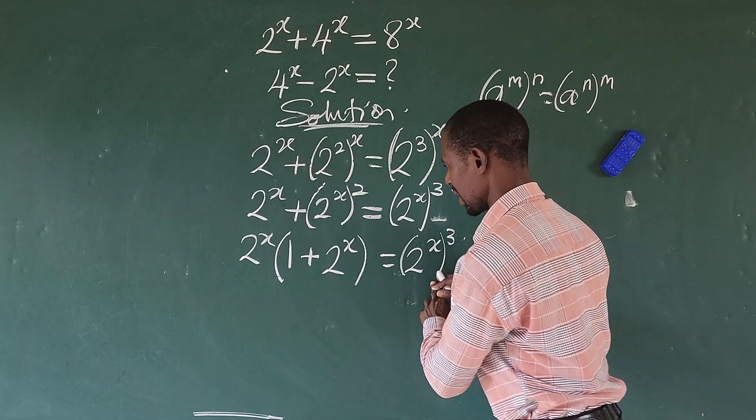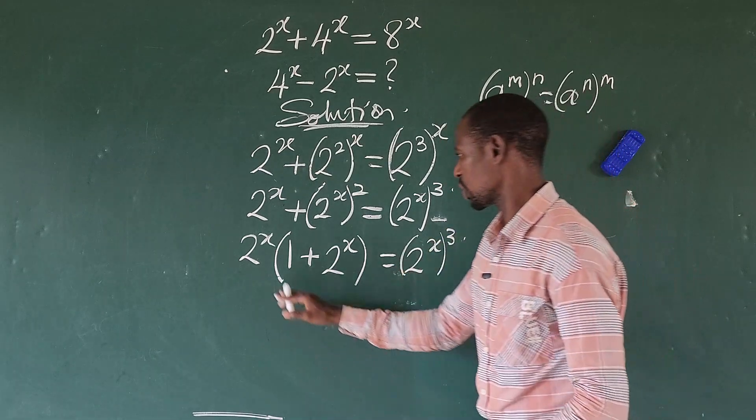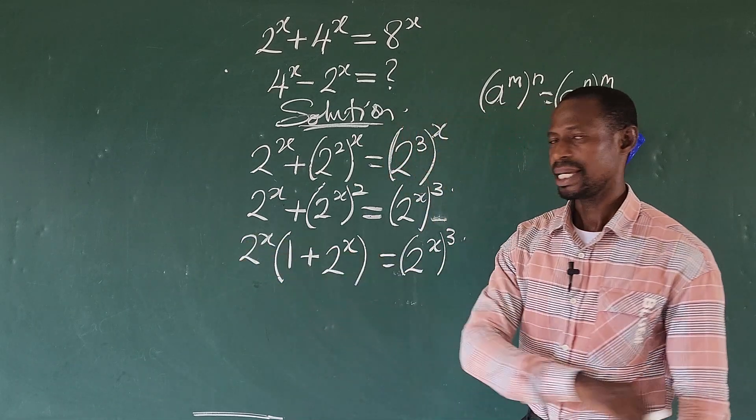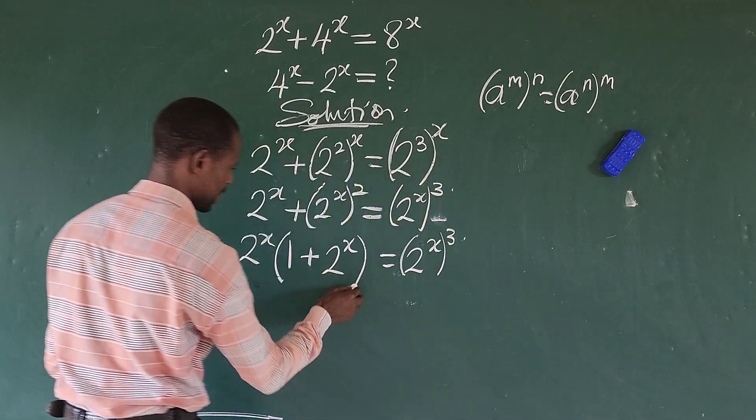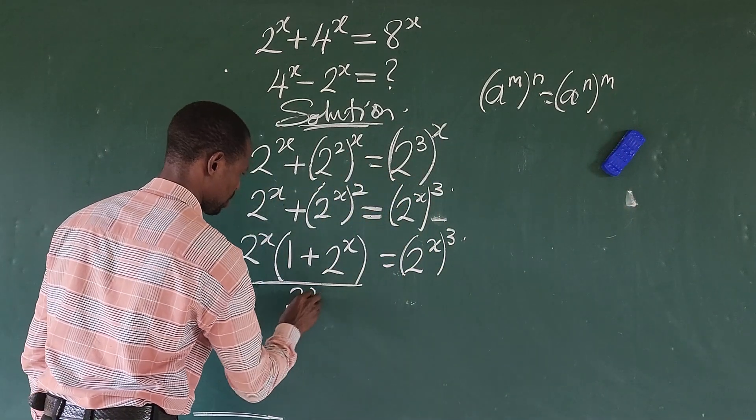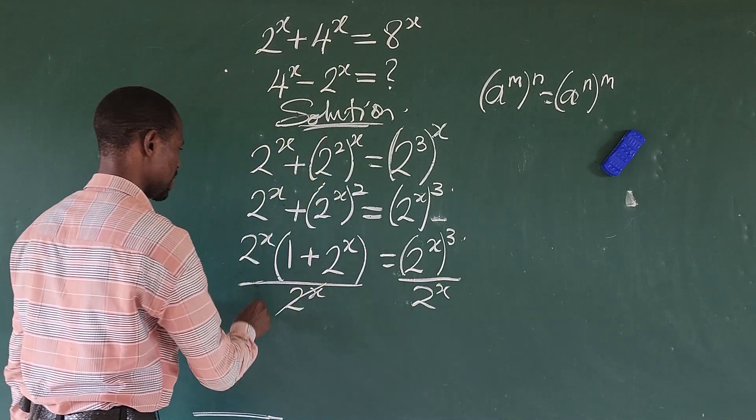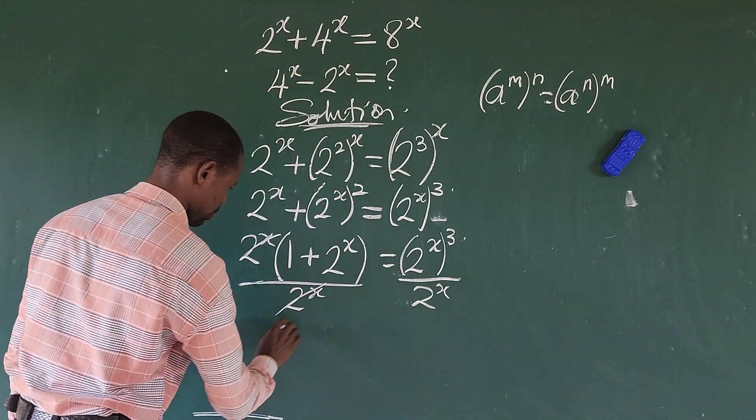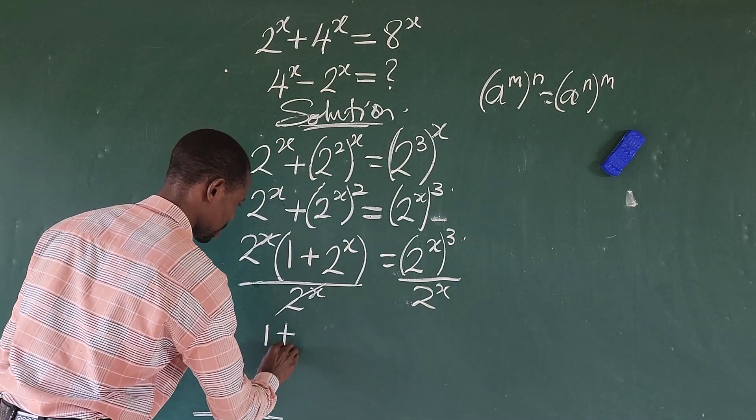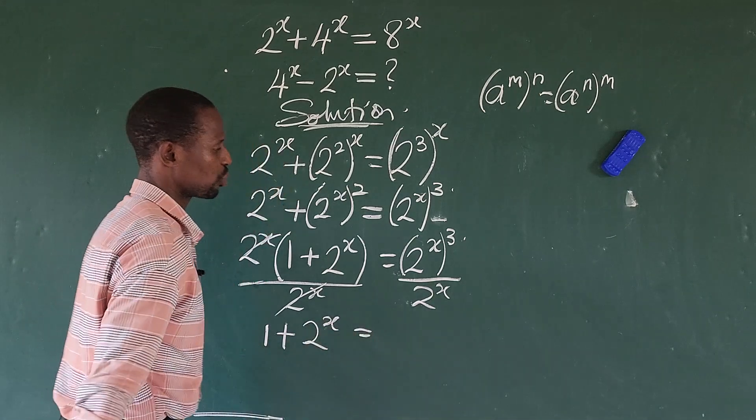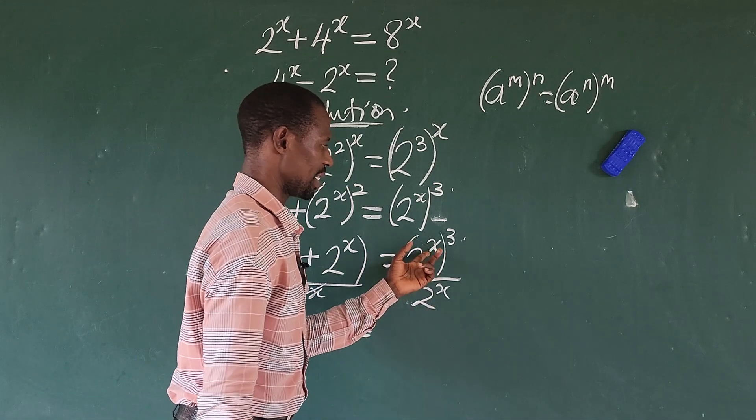Here we have 2 to the power of x on the right hand side and we will equally have 2 to the power of x here. So we can divide. Let's divide by 2 to the power of x. So this leaves the system. So we have here 1 plus 2 to the power of x is equal to, if we use this to divide this,